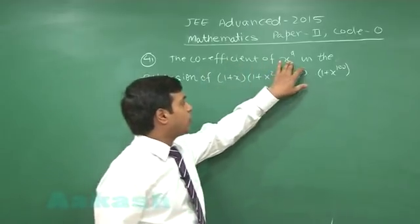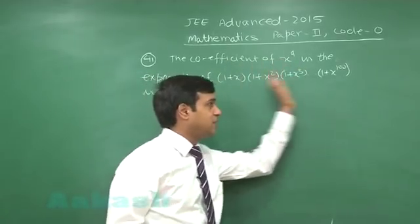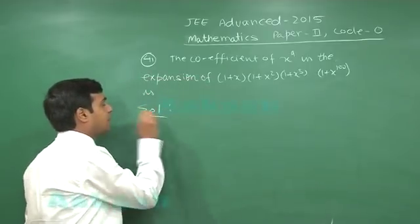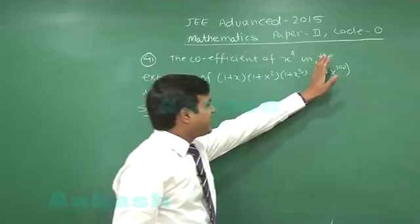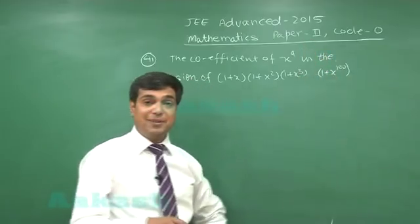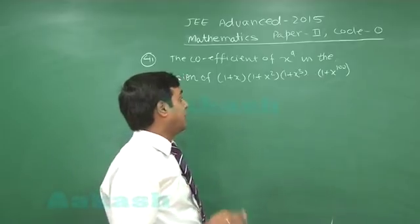We are looking for the coefficient of x^9 in this expansion. We can terminate it at (1+x^9) because after that we will be getting (1+x^10) and higher terms, which would not be required.